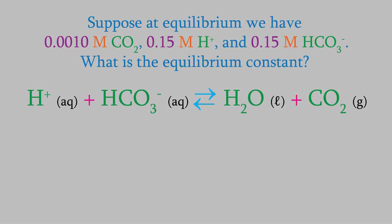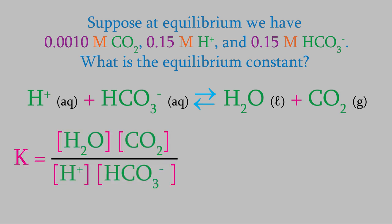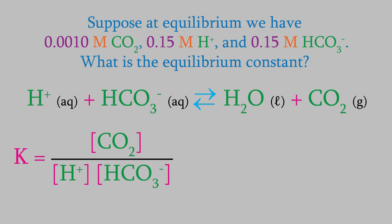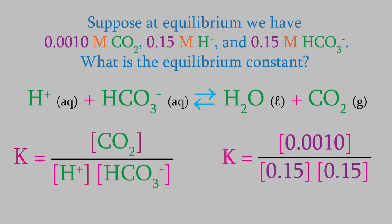This is a problem we already know how to solve. We just need to write out the equilibrium expression, which is products over reactants, each raised to the appropriate power. We saw several examples like this in the previous two videos. We don't usually include pure liquids or solids in the equilibrium expression, so we'll leave water out of our formula. That means we have CO2 in the numerator and hydrogen and bicarbonate ions in the denominator. We plug in the concentrations and when we solve the formula, we get a value of 0.044 for K.